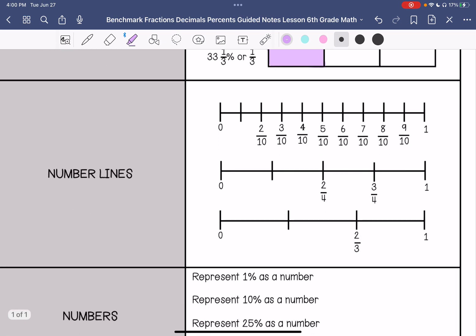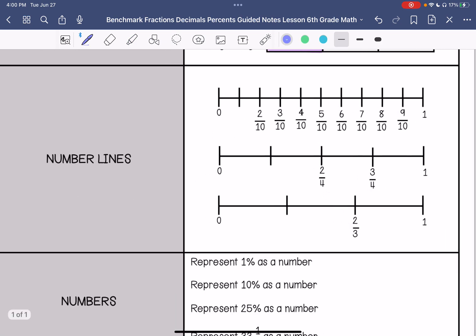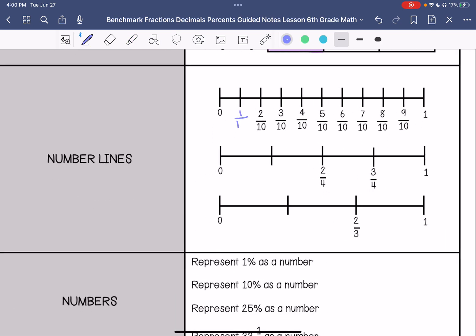If I were to represent these on a number line, one-tenth would go here, one-fourth, and one-third. And I line these all up together so you can kind of see how they compare with each other.